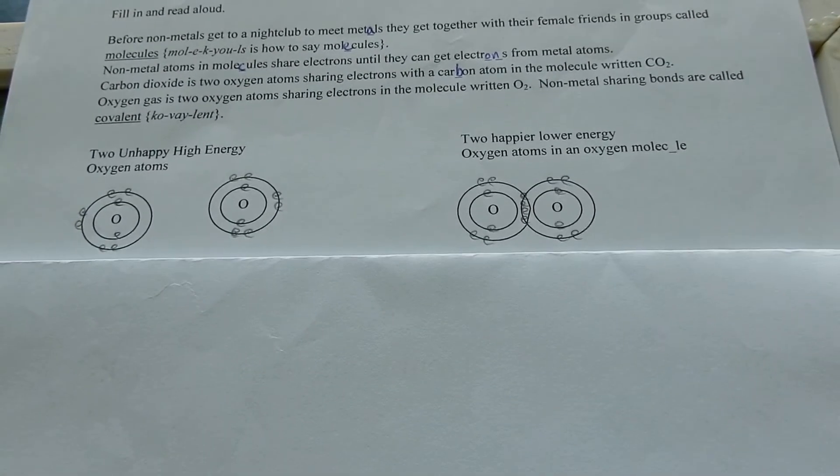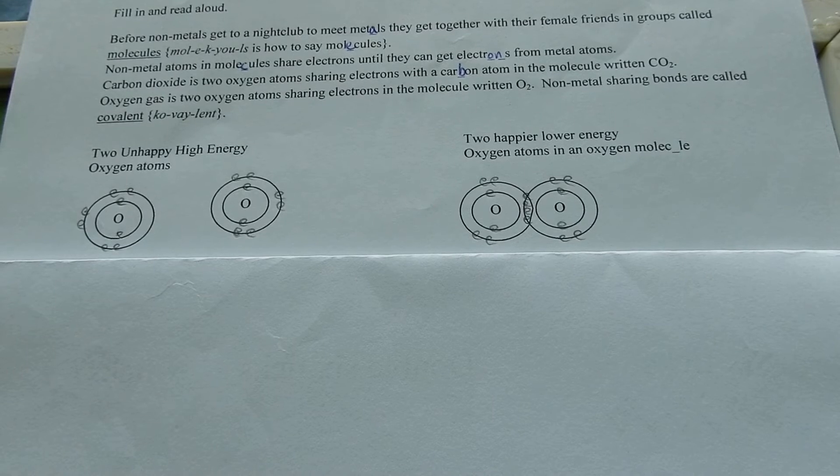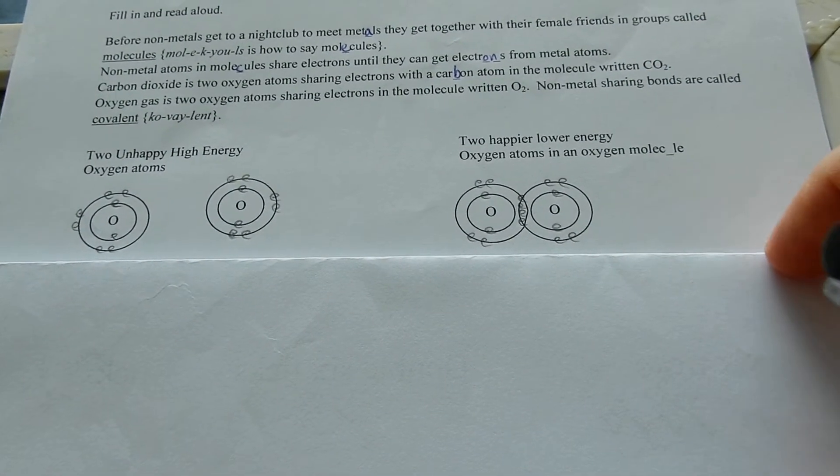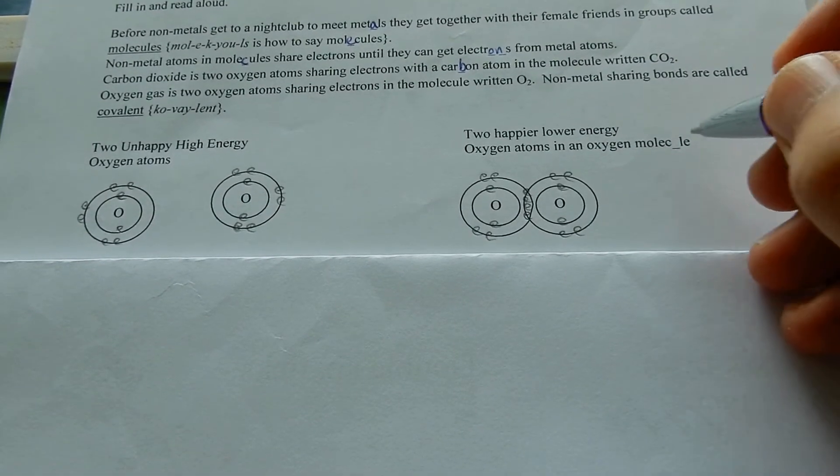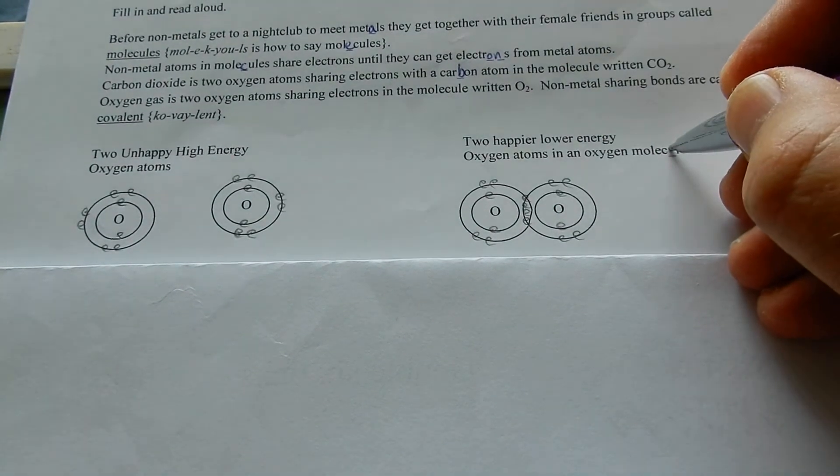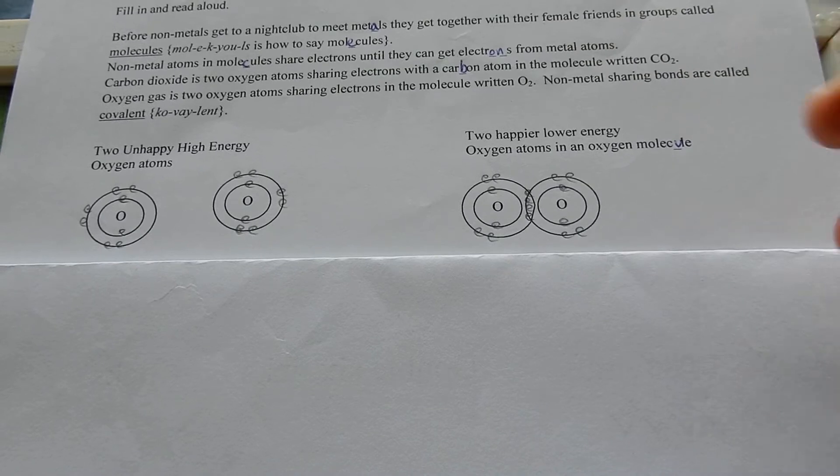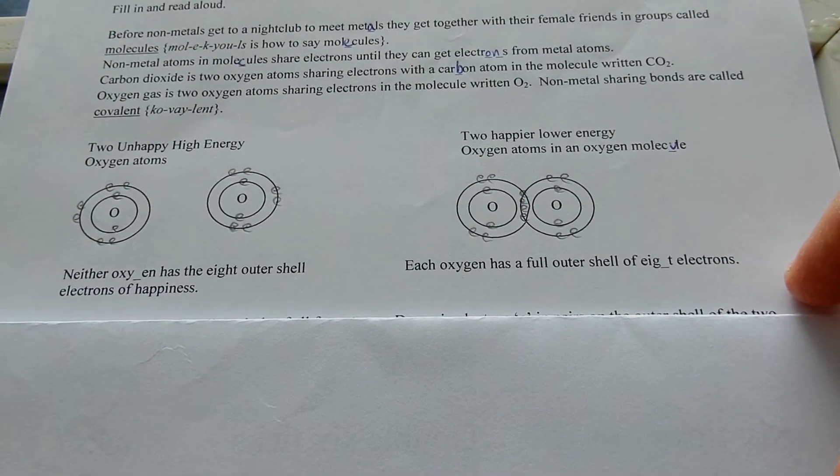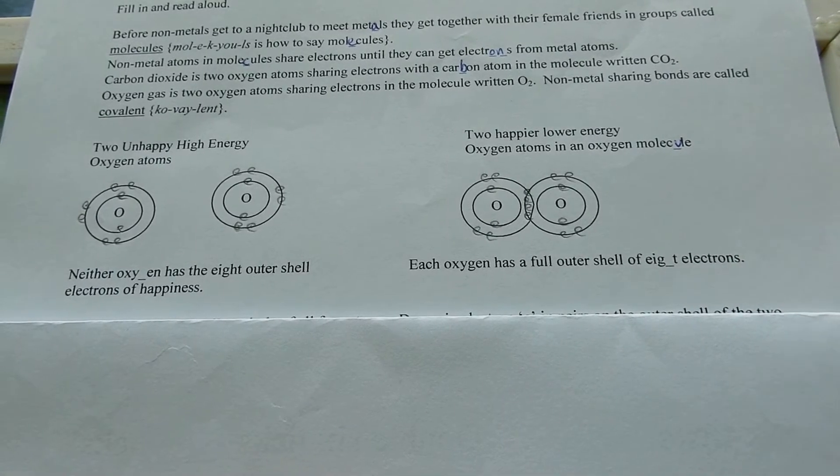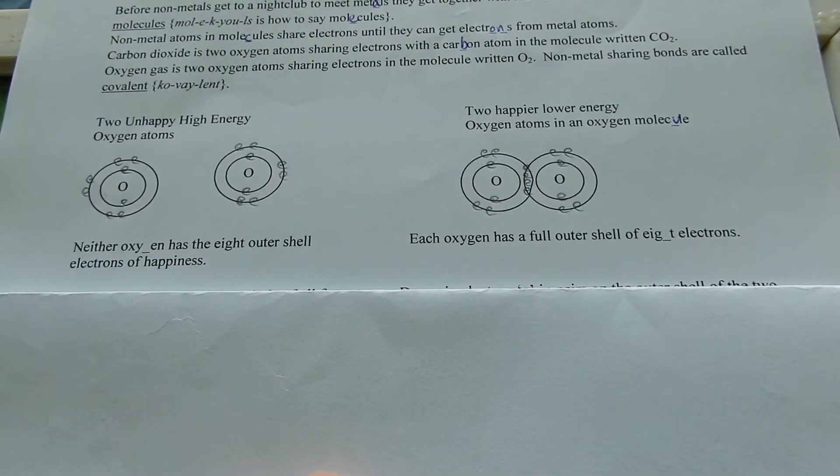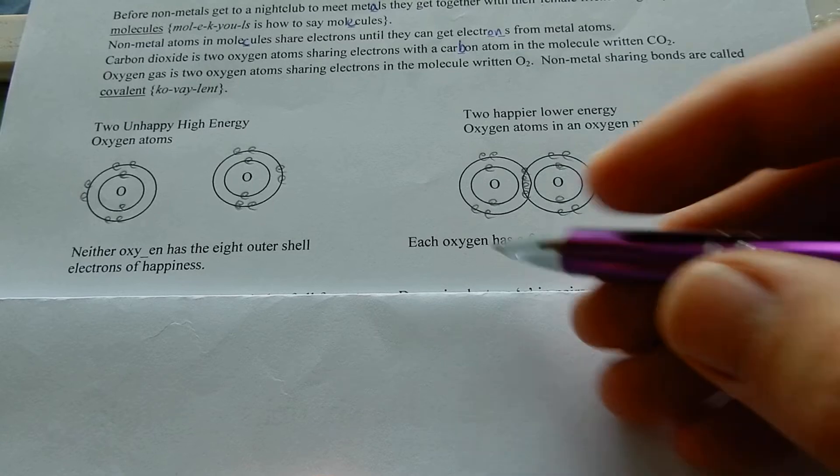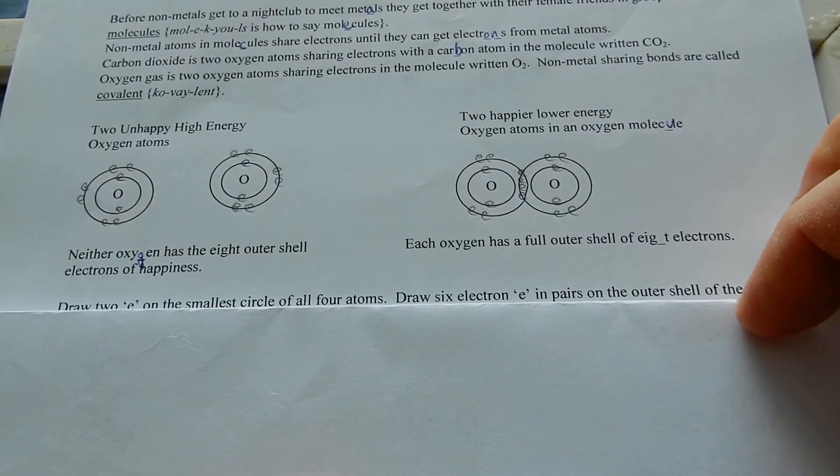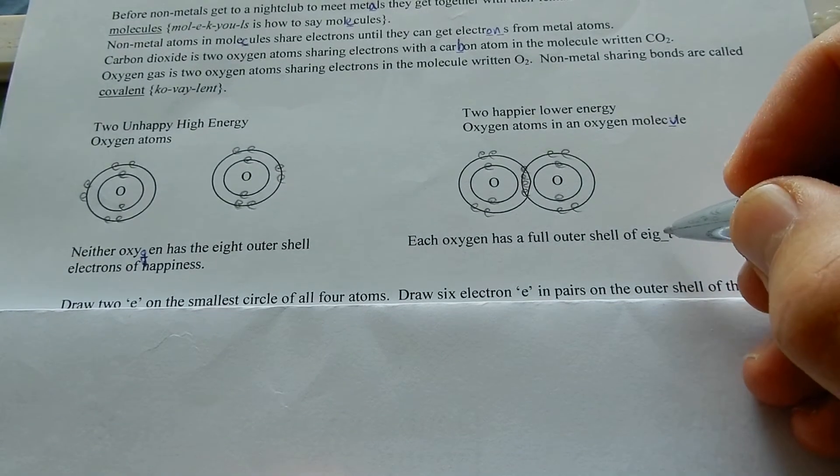Two unhappy high energy oxygen atoms and two happier low energy oxygen atoms in an oxygen molecule. Neither oxygen has eight outer shell electrons of happiness. Each oxygen has a full outer shell of eight electrons.